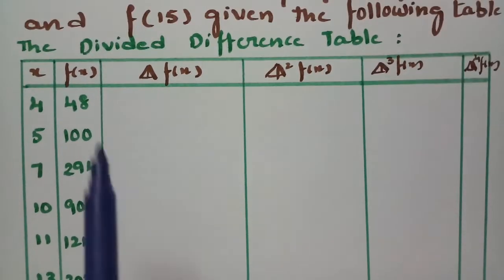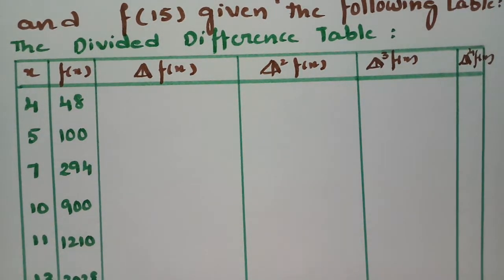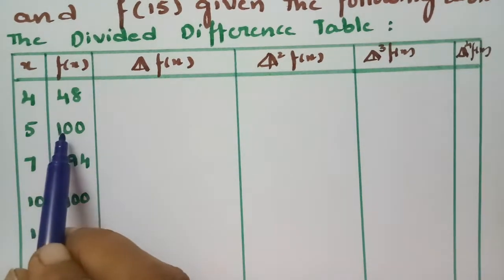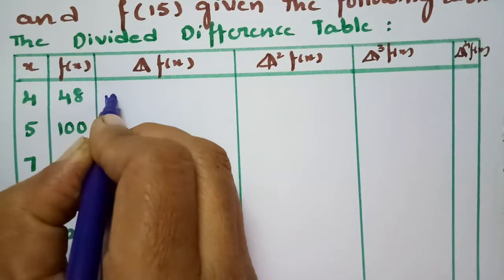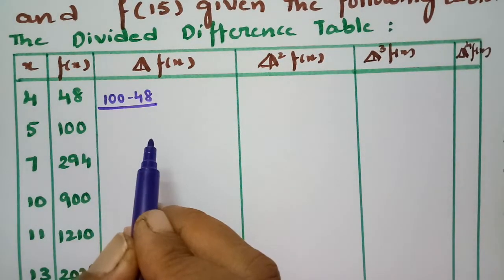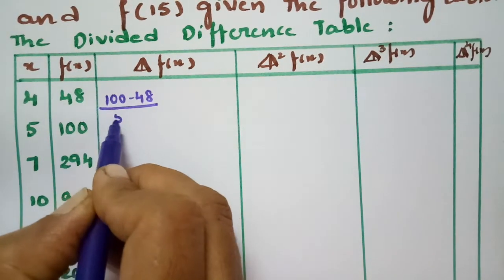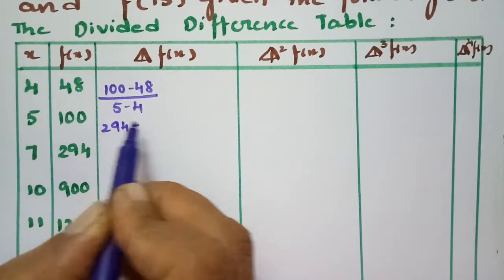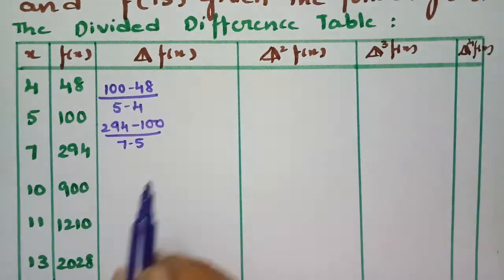First of all, we have to use the divided difference table. Using this table, we have to calculate all these values. As with the usual difference table, we have to subtract: this is 100 minus 48, and then divide — since it's the divided difference table, we divide by 5 minus 4.